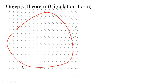Our next topic in surface integrals is actually a generalization of something we've already seen: Green's theorem. Green's theorem had two forms, and the form we want to talk about is the circulation form. It said that if you have a vector field — imagine these little arrows representing the flow of some fluid or force — and you want to find the circulation around a curve in a counterclockwise direction, Green's theorem gave you a way to do that using a double integral over the interior instead of a line integral.